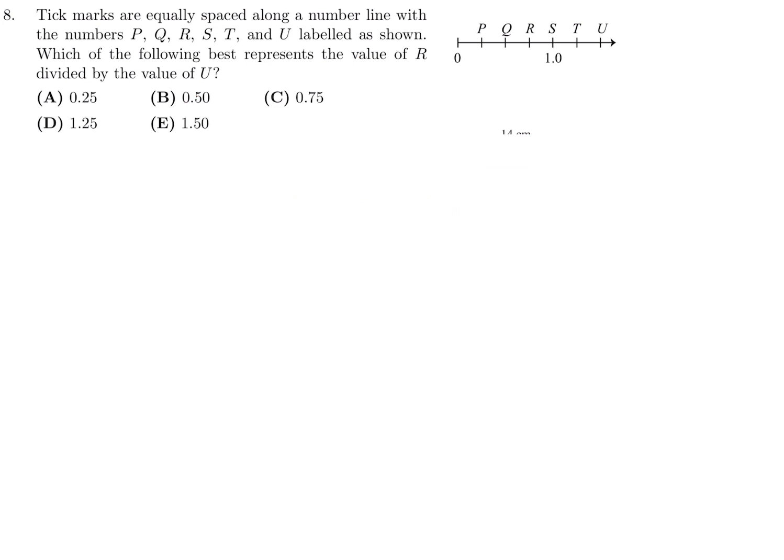Tick marks are equally spaced along a number line with the numbers PQRSTU labeled as shown. Which of the following represents the value of R divided by the value of U? Well, if they're equal, then that means you have 1, 2, 3, 4. 4 divided by 1 is the distance between each of those tick marks, so that's 0.25.